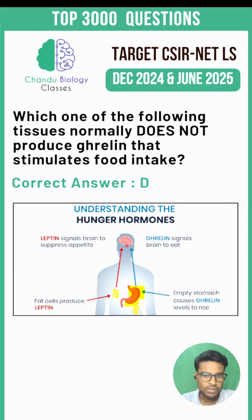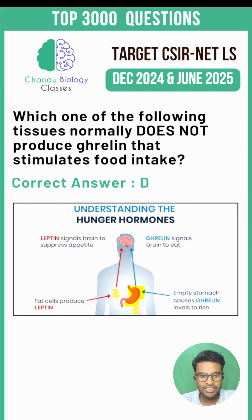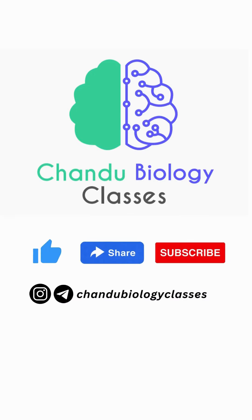Ghrelin is a hormone that stimulates appetite and plays a role in regulating energy balance. While the liver is involved in various metabolic processes, it is not a significant source of ghrelin.